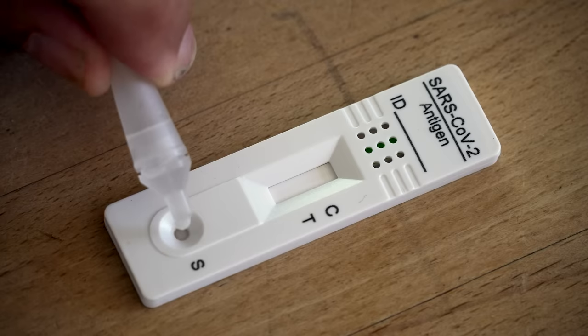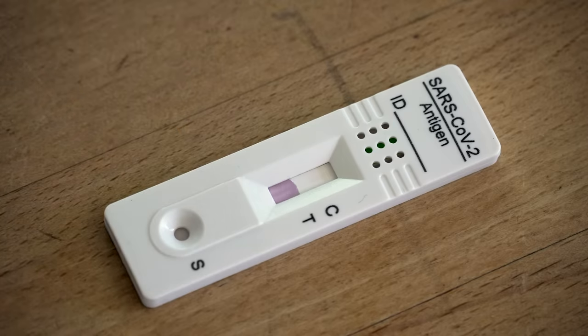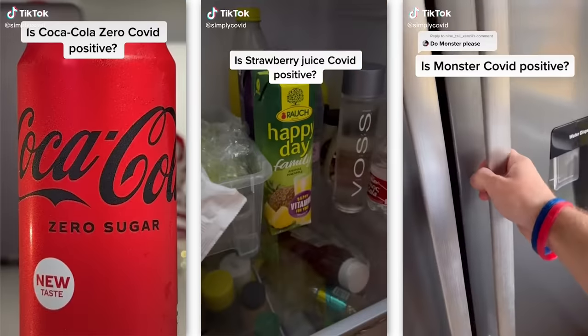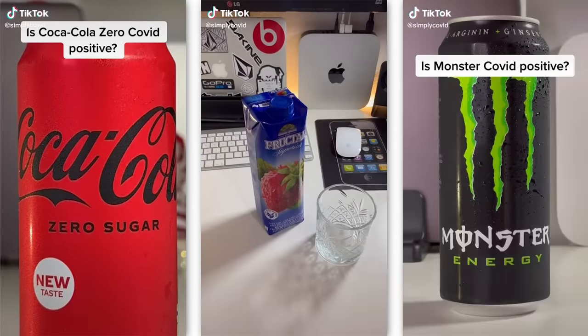And there's also ways people cheat the test. In fact, a few TikToks have shown tests with Coca-Cola zero sugar, strawberry juice, or Monster Energy get a positive result.